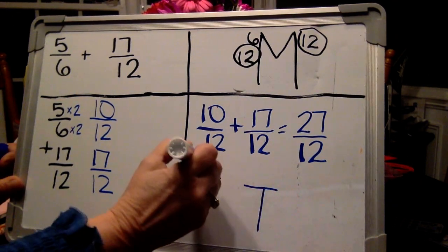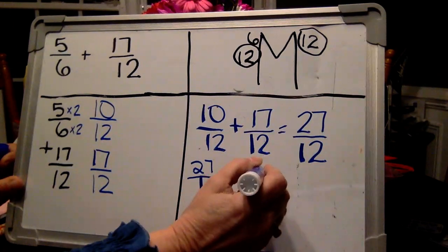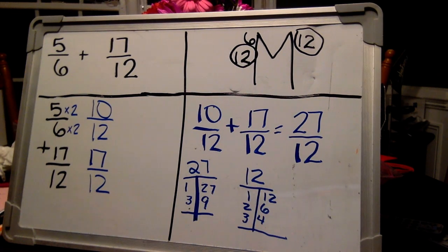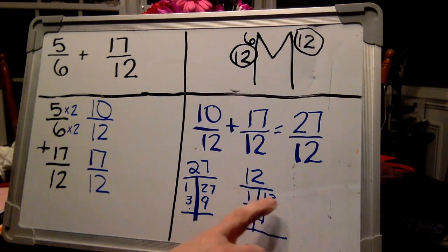All right, so we have to think of factors for 27 and factors for 12. I would like you to pause the video and try to see if you can come up with the factors yourself. Did you come up with these? 1 in 27 and 3 in 9. 1 in 12, 2 in 6, 3 in 4.